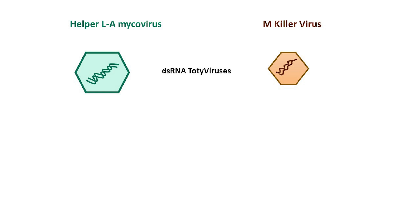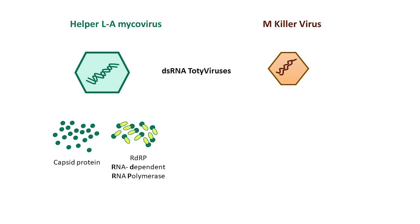Both mycoviruses are classified as double-stranded RNA viruses from the family Totiviridae. The helper LA virus contains the genetic information for two key proteins: the capsid protein, which functions to safeguard the viral genetic material, and the RNA-dependent RNA polymerase, or RdRp, which serves for replication of the viral genome.